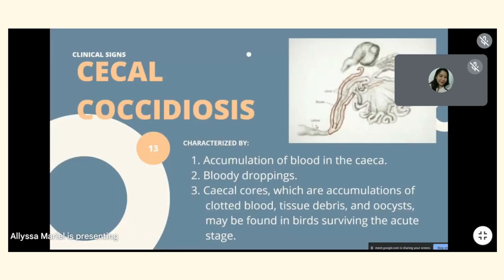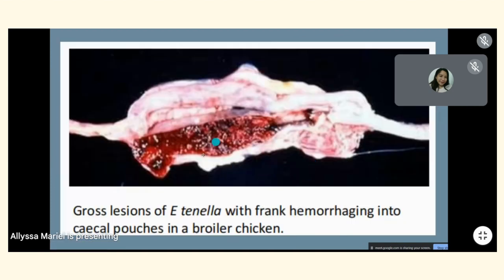Cecal coccidiosis is caused by E. tenella and is characterized by accumulation of blood in the ceca, bloody droppings, and cecal cores — which are accumulations of clotted blood and tissue debris — found in birds surviving the acute stage. Gross lesion of E. tenella shows frank hemorrhaging into the cecal pouches in a broiler chicken.